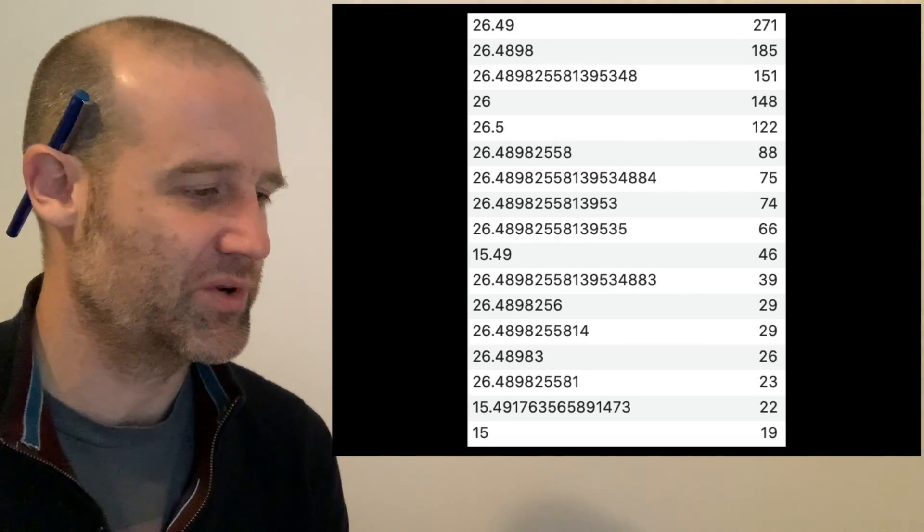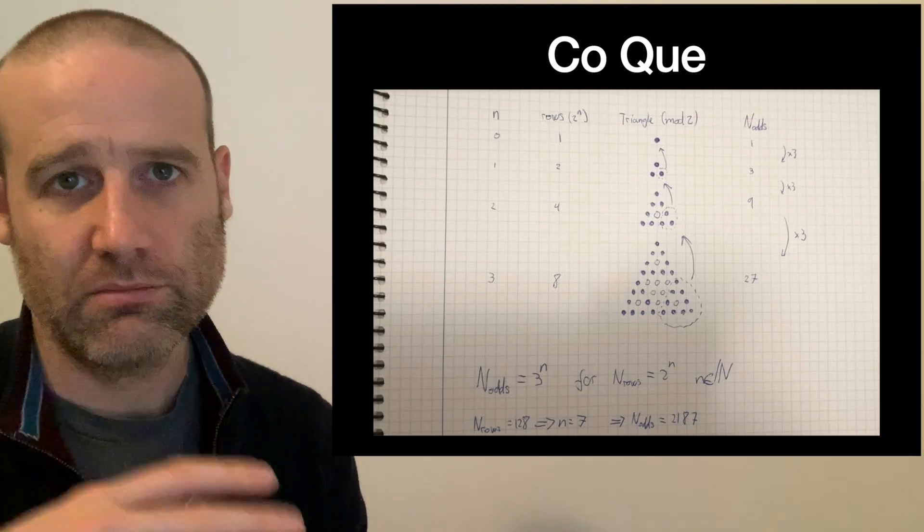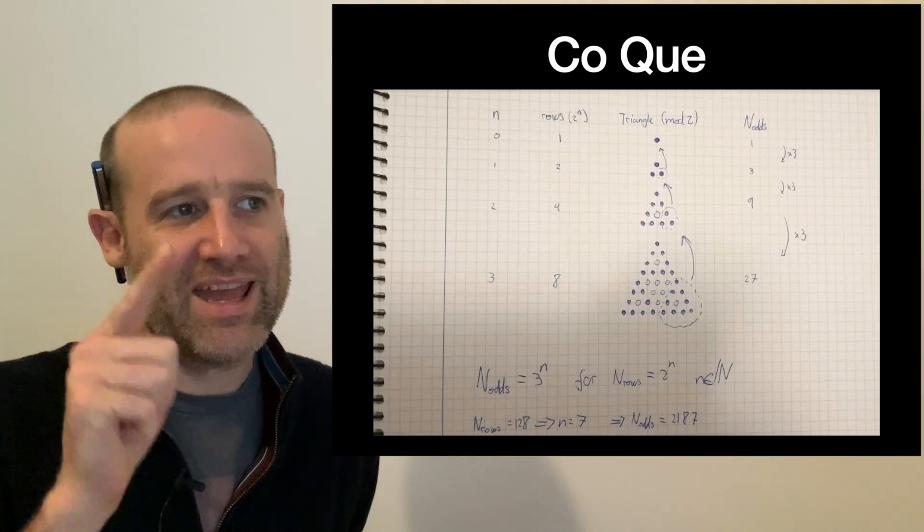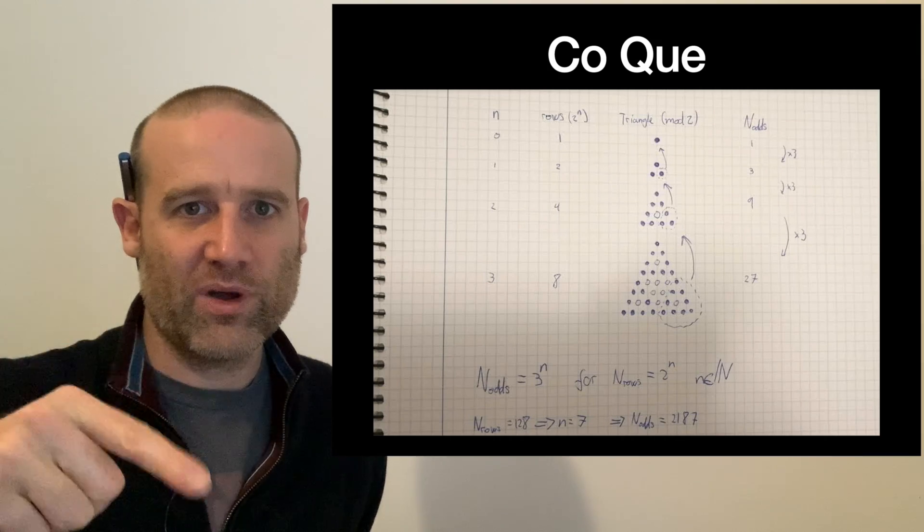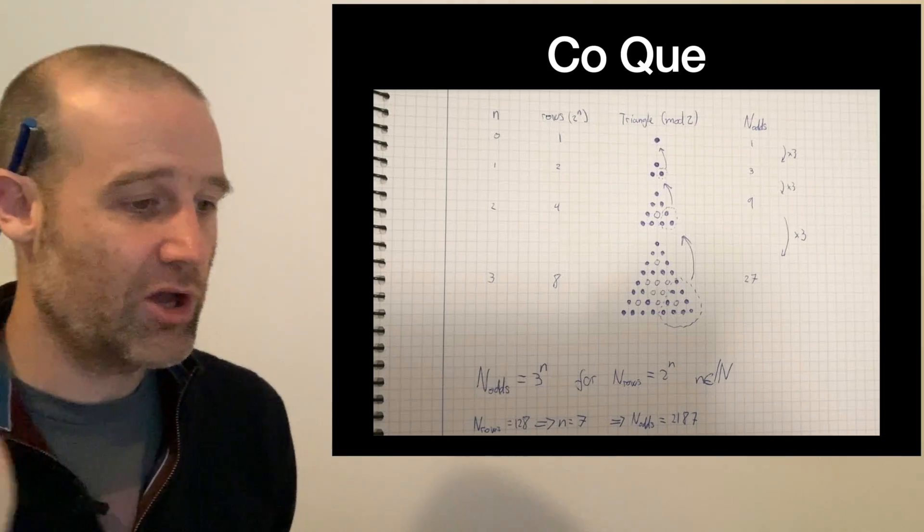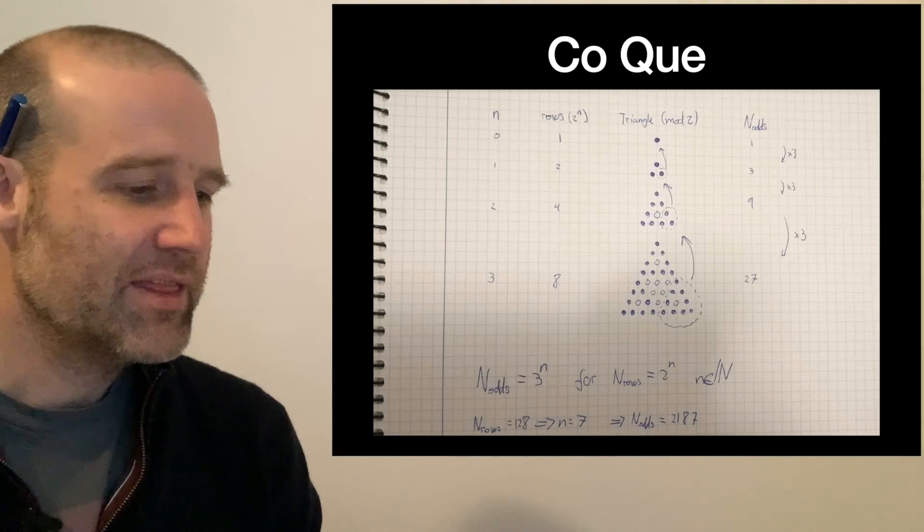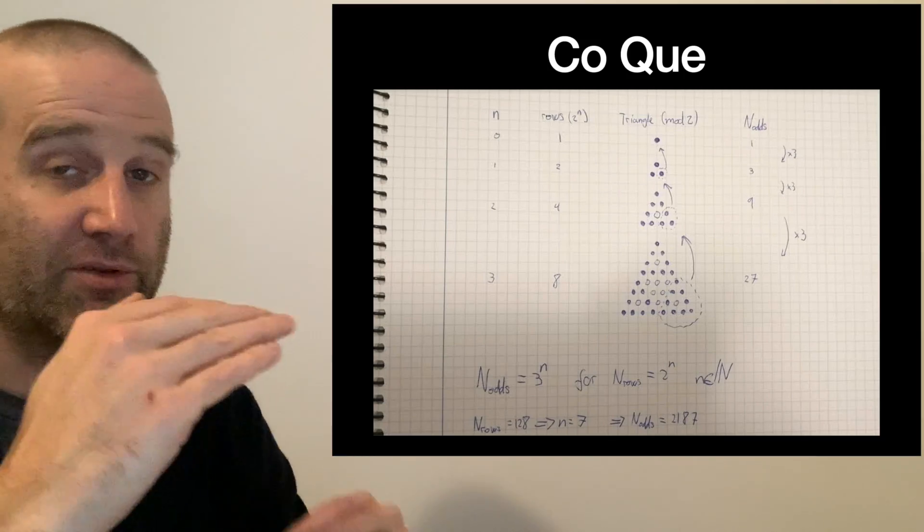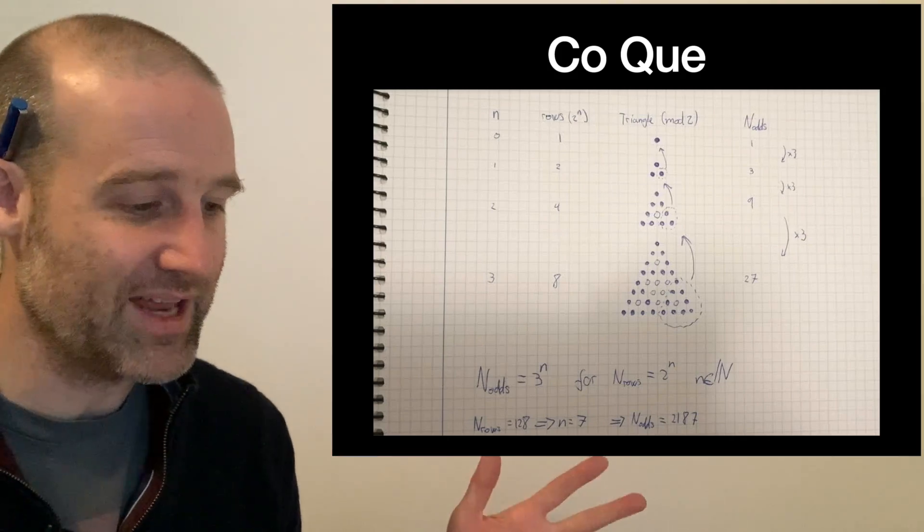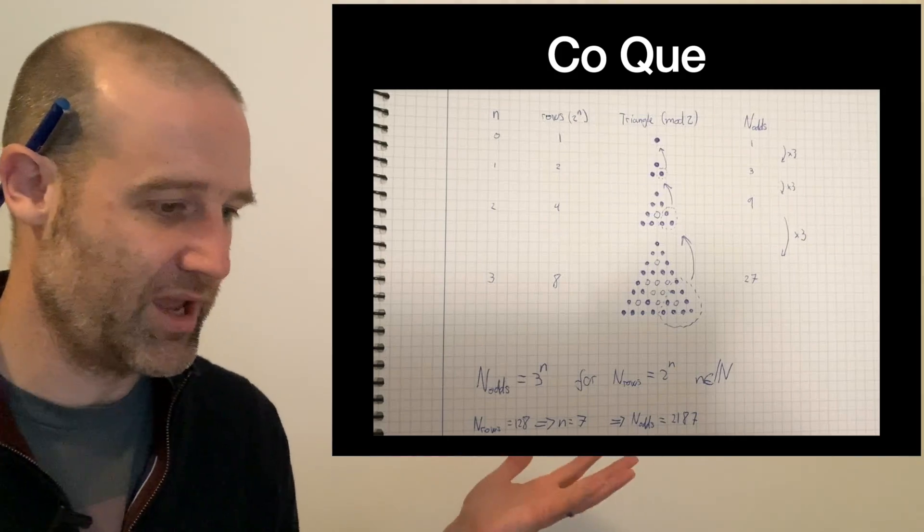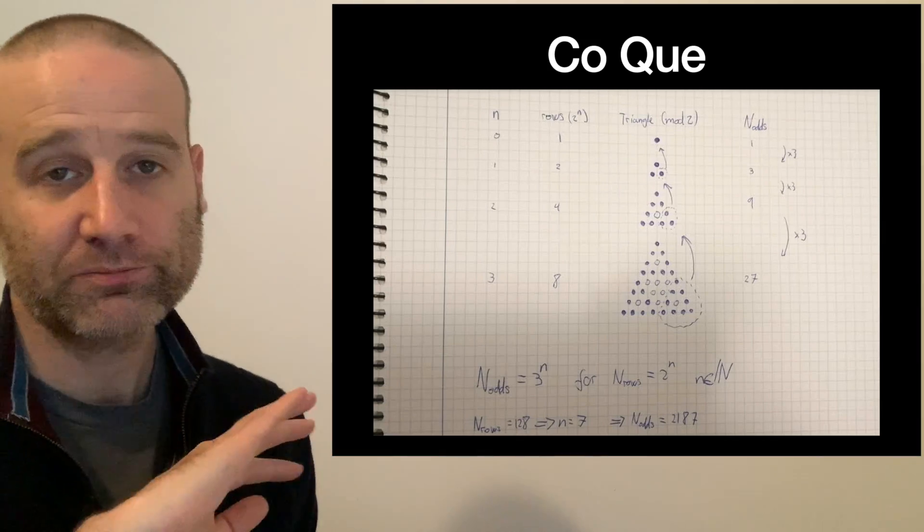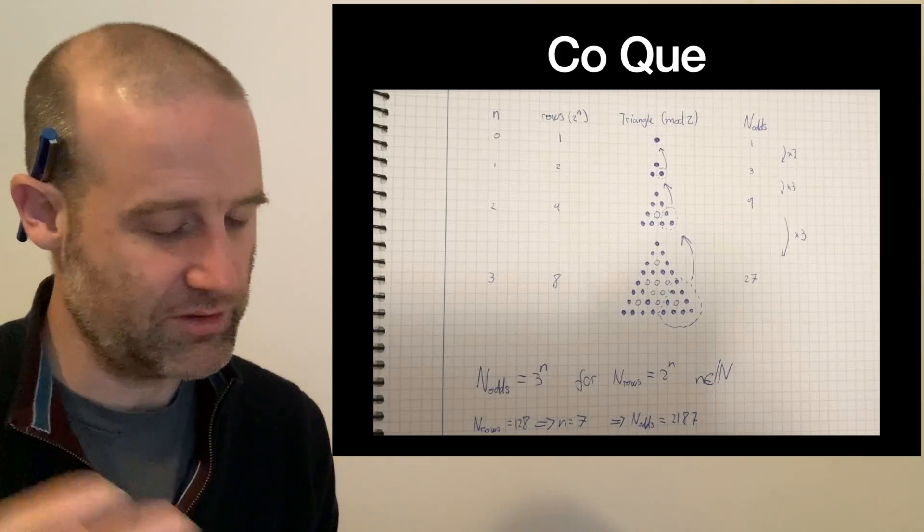The correct answer was variations on 26 point something, so we accepted any level of rounding on that. Co here, one of the reasons why I picked 128 rows is because there are clever ways to solve that without necessarily having to do it in programming. Co noticed that each time you double the number of rows going through your powers of two, you get three times as many odd numbers. They were able to use that to scale up and work out how many are odd.